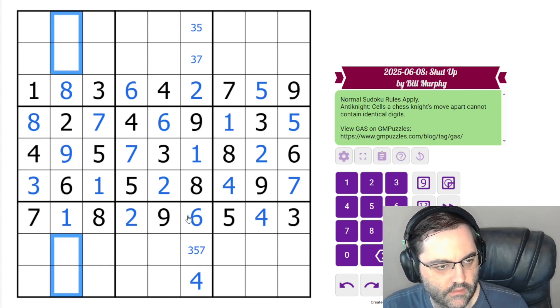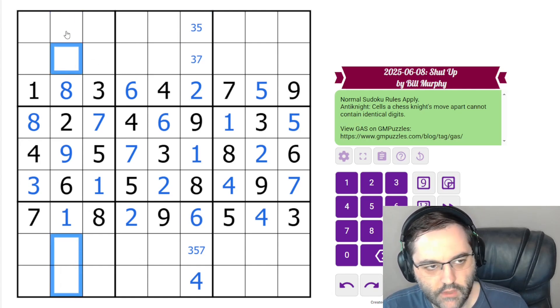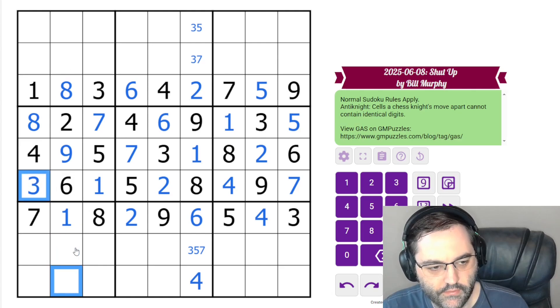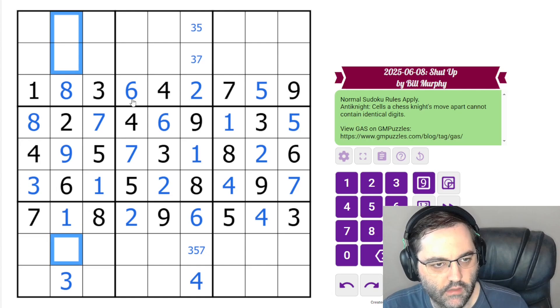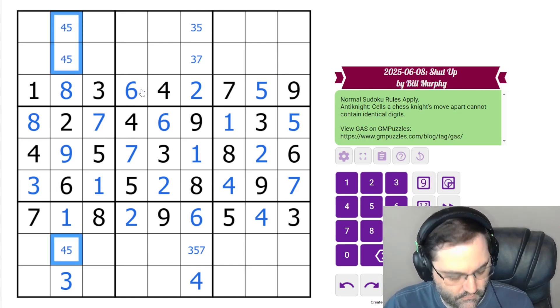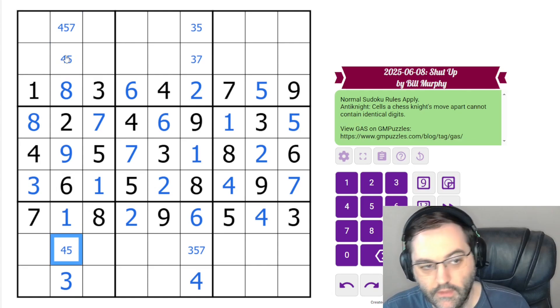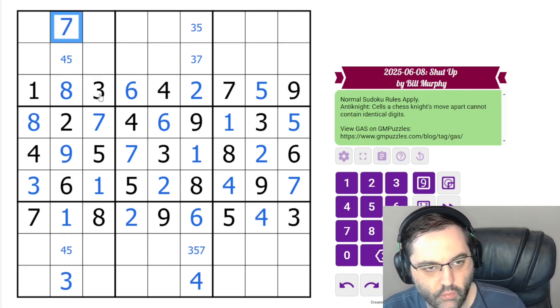I think the first one I found is in this column. We need a four, and it can't go in this box. And this four sees that cell. And we're going to be left with three, five, seven here, which we can't resolve yet. This can't be five, and this can't be seven. What about these? Three can't go in these cells, and this three sees that cell, so this is a three. And we get a seven as well.